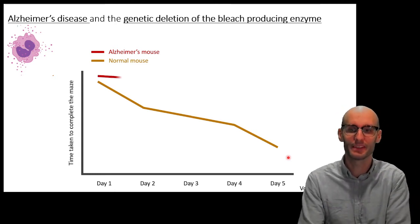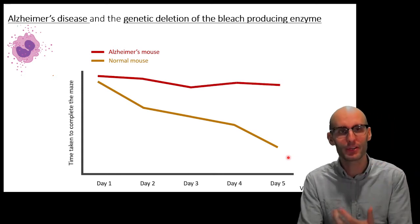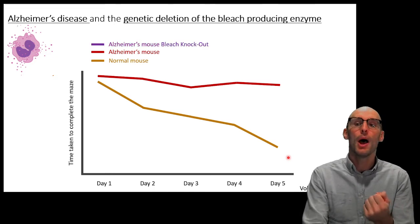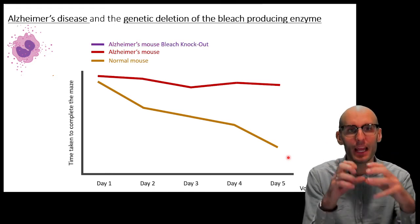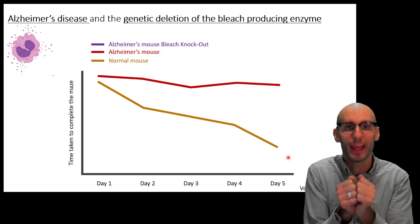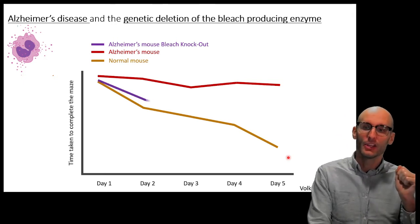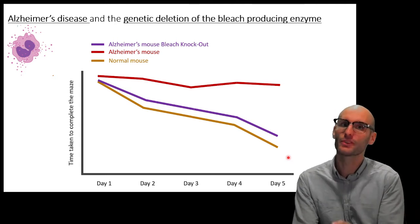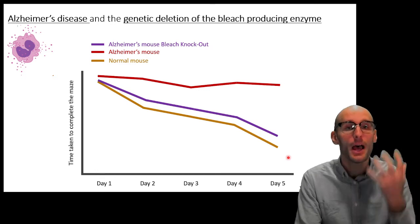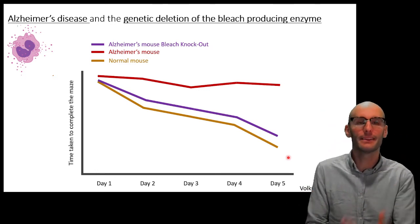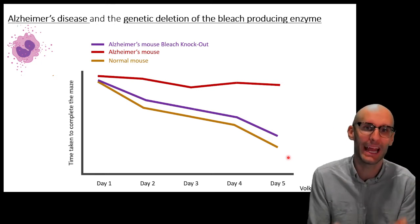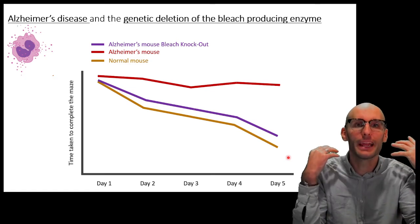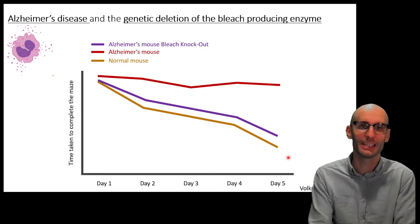Now in an Alzheimer's mouse where the gene to produce bleach has been knocked out — so the neutrophils cannot produce bleach — the mouse performs much more similarly to the normal healthy mouse. The disease was either prevented or at least delayed by deleting that gene. So in this animal model, bleach production by neutrophils is contributing to Alzheimer's disease. This is because bleach isn't just toxic to bacteria — it is also toxic to our own cells, including our neurons.